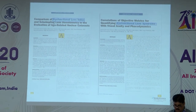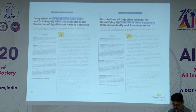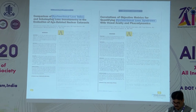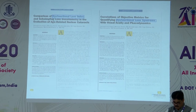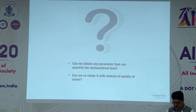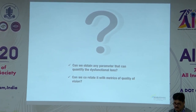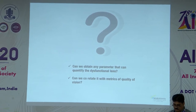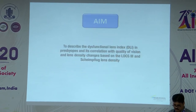This has already been published in the Journal of Cataract and Refractive Surgery, comparing the dysfunctional lens index and the Scheimpflug lens densitometry, along with objective metrics of quantifying the syndrome with visual acuity and phaco dynamics. This led to the research question: can we obtain a parameter that can quantify the dysfunctional lens and correlate it with metrics of quality of vision? The aim is to describe the dysfunctional lens index in presbyopes and its correlation with quality of vision and lens density changes based on LOCS 3 and Scheimpflug lens density.